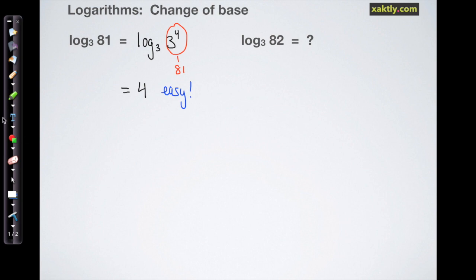But what if we change that 81 to 82? Then that's not such an easy problem anymore because 82 is not a nice convenient power of 3. So we need to come up with some other way to solve this problem.